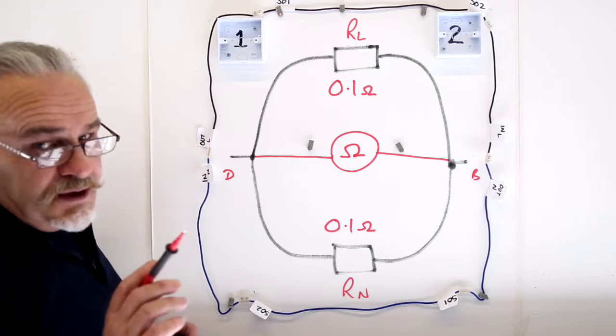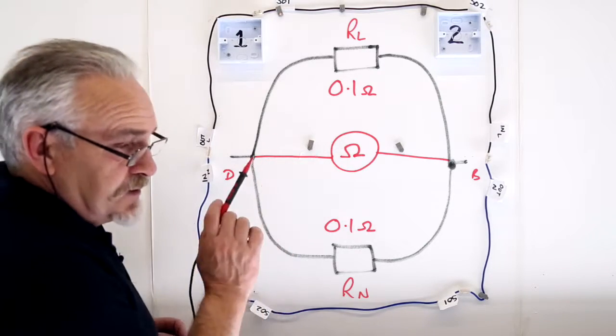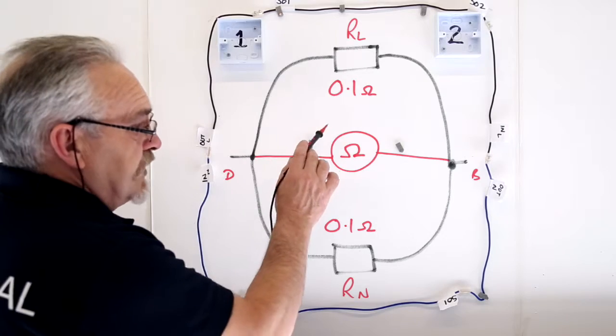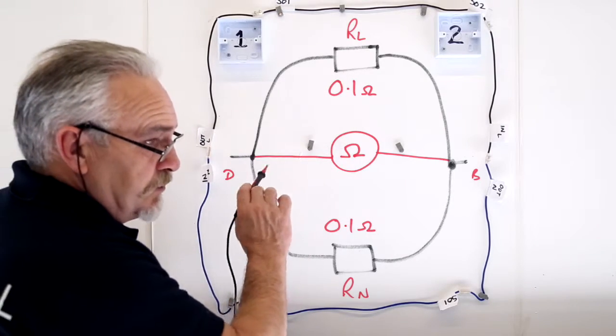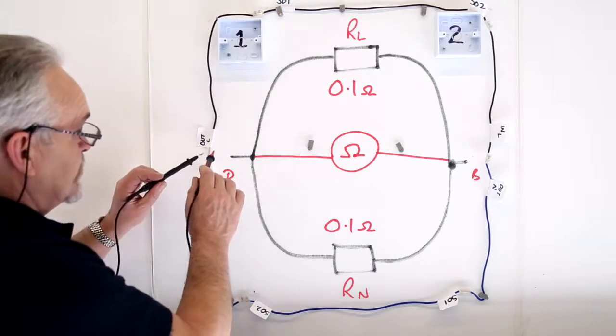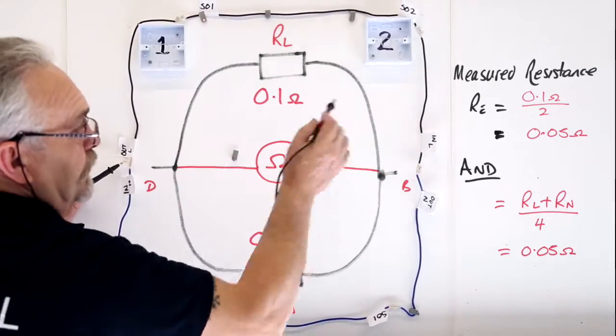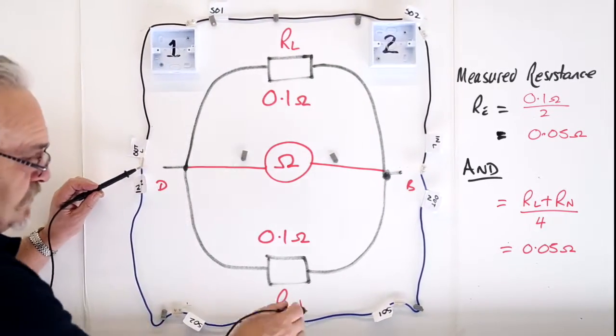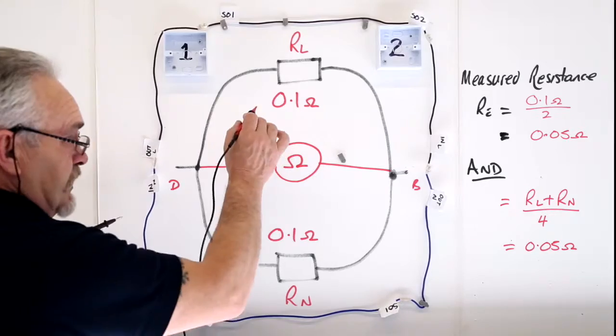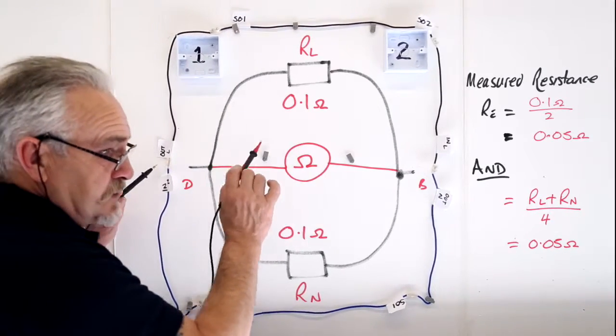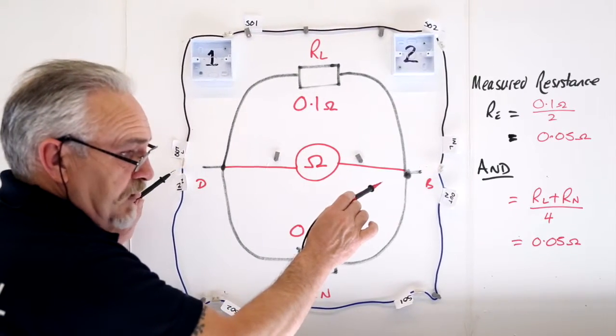You know what the secret is when you've got two resistors of the same value in parallel. You simply divide the resistance value by the number of resistors. For instance, if that was 0.1 of an ohm, and that was 0.1 of an ohm, divided by two, the resultant resistance would be 0.05 ohms.